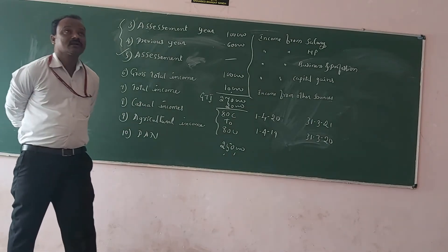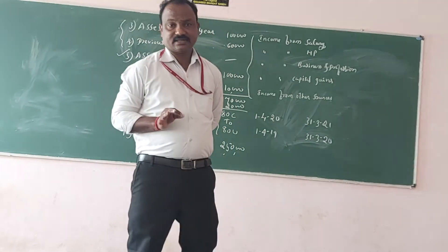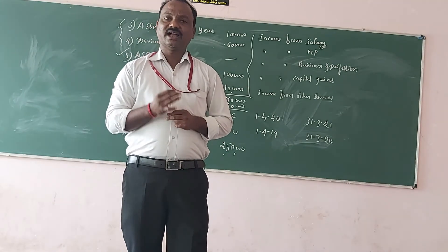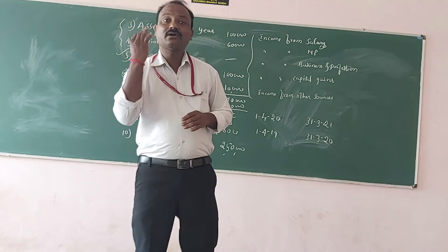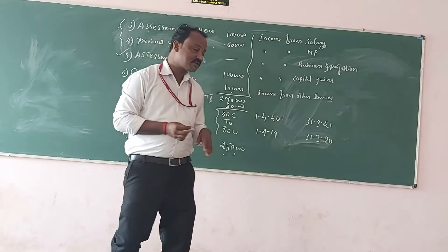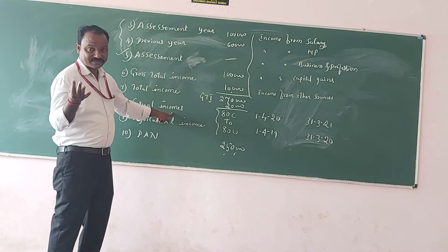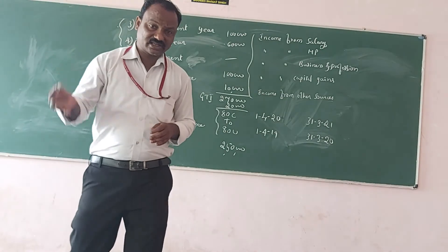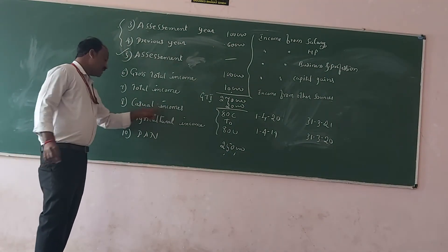Next is casual incomes. Casual incomes means unexpected incomes. For example, I have taken a lottery and won a prize of 1,000 — there was no certainty I would earn that income. It was uncertain. Such uncertain incomes are called casual incomes. Another example: I bet 10,000 or 20,000 in a horse race and won — that was totally unexpected. Such unexpected incomes are called casual incomes.